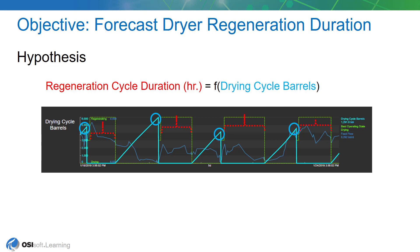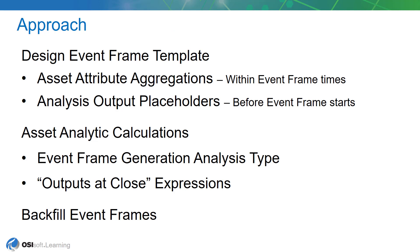So in a nutshell, this is what we'd like to accomplish. Here will be our approach. We're first going to define and design an event frame template. The event frame template is really what you need to be able to add other values to your event frame record — it's going to define the columns and where that data comes from. There are two ways to get data into an event frame template: one through asset attribute aggregations, and the other by creating analysis output placeholders.